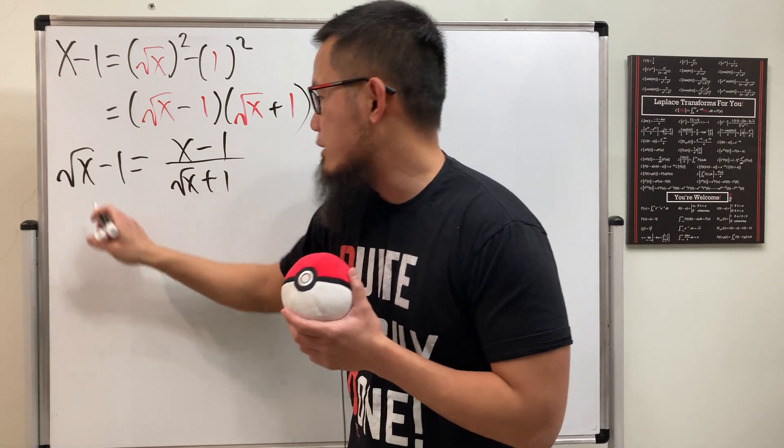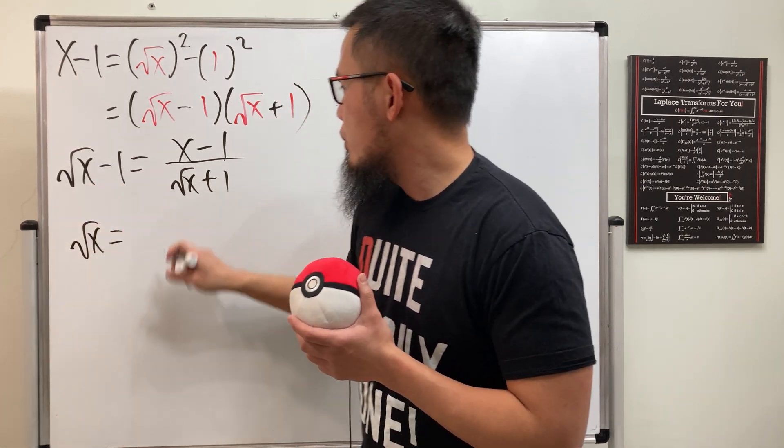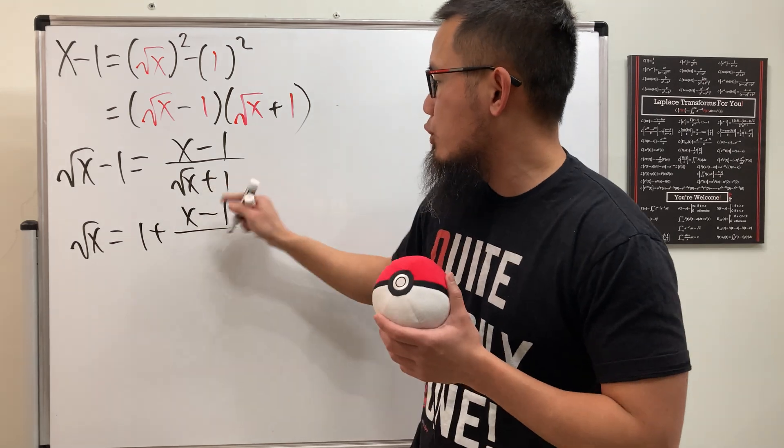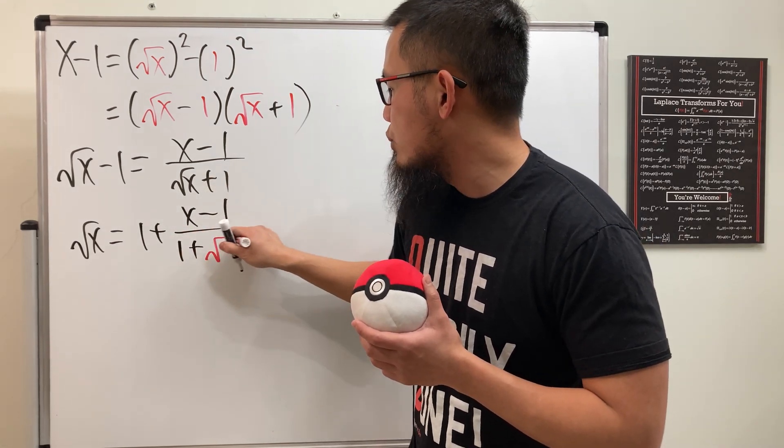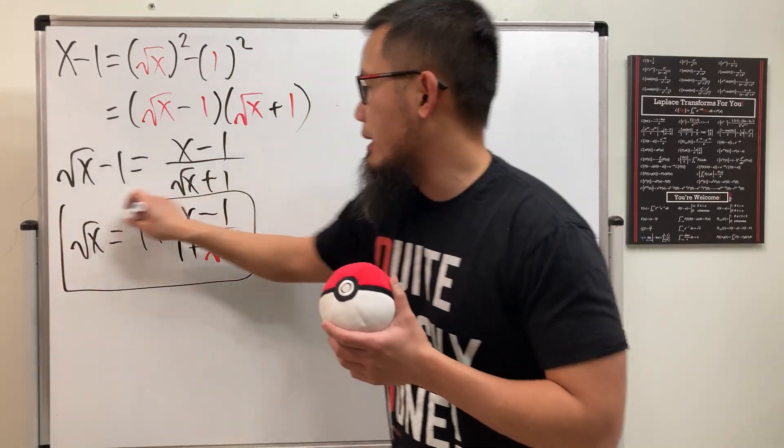And now I'm going to add one on both sides. We have square root of x. This right here is equal to 1 plus x minus 1 over, I'm actually going to write this as 1 plus square root of x, like this. And this is actually the formula that we need.